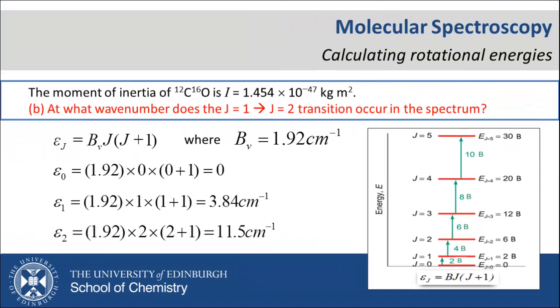In answering part B, we can do it in two ways. The energy of any transition is the difference between the energies of the two states involved. Thus, subtracting E2 minus E1 gives us a transition corresponding to 7.69 wavenumbers.